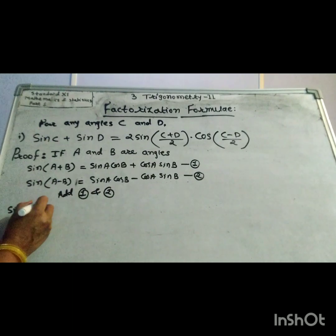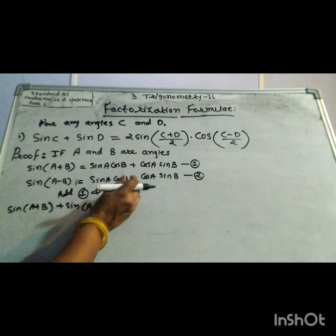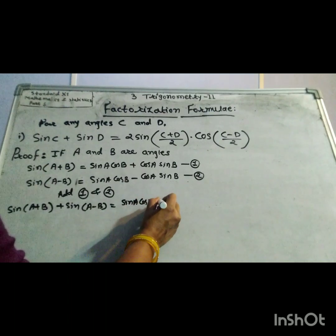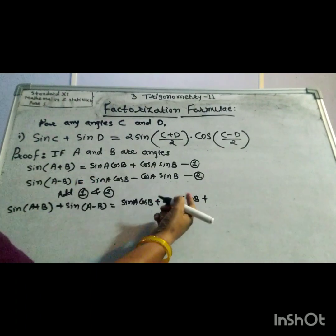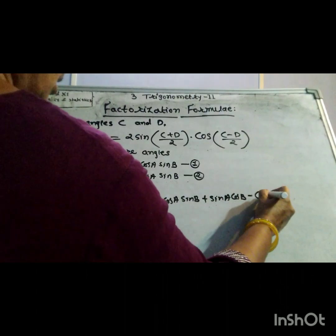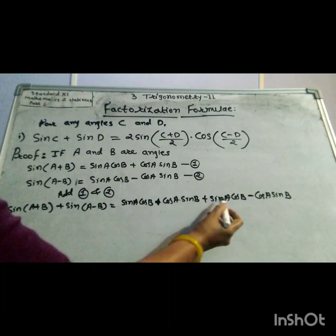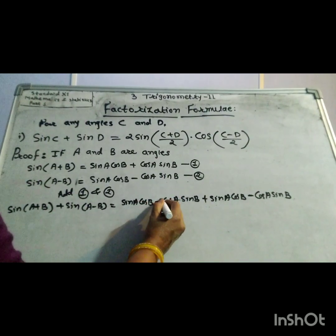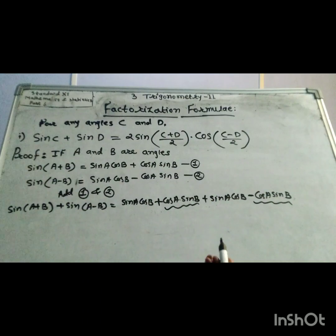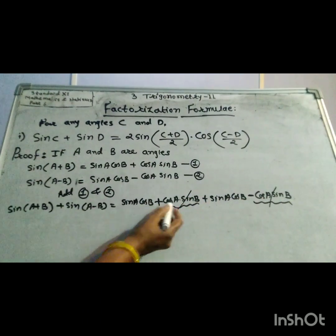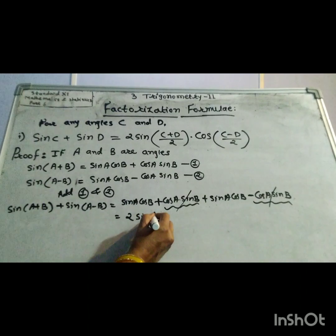sin A plus B plus sin A minus B equals: sin A cos B plus cos A sin B plus sin A cos B minus cos A sin B. cos A sin B minus cos A sin B equal to 0, so sin A cos B plus sin A cos B equal to 2 sin A cos B.